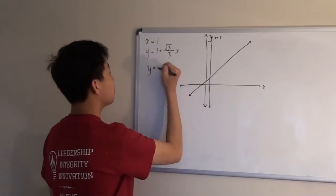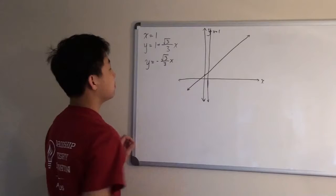So, what I mean by that is the equation is just going to look like this: y equals negative root 3 over 3x.